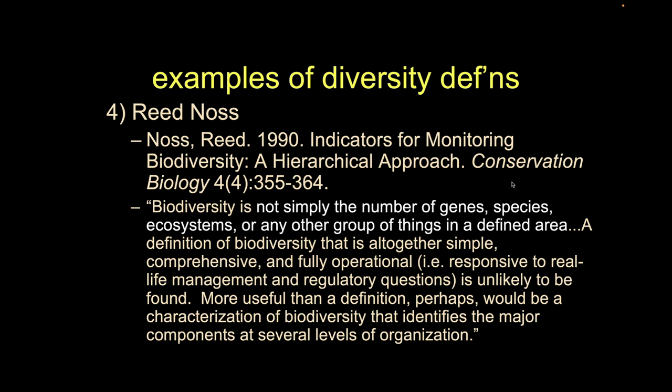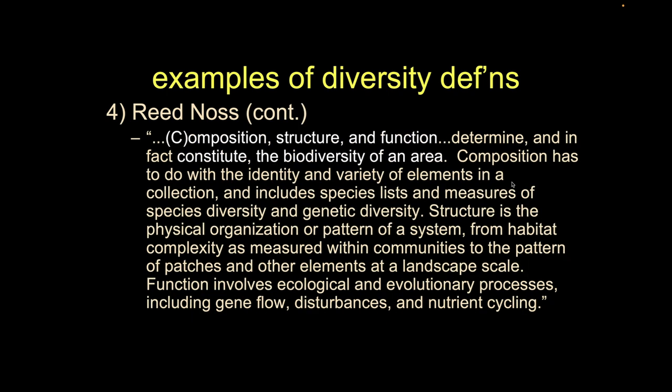Reid Noss, a famous conservation biologist, in a paper from the same era, says biodiversity is not simply the number of genes, species, ecosystems, or any other group of things in a defined area. A definition of biodiversity that is altogether simple, comprehensive, and fully operational is unlikely to be found. He's saying it's all this complexity of life and it's hard to boil down to one simple measure. He goes on to say it includes the composition, the structure, and the function of a given area.